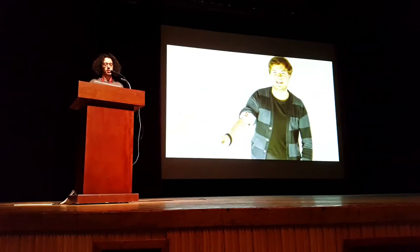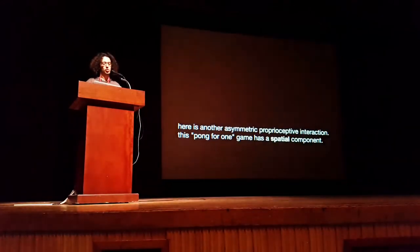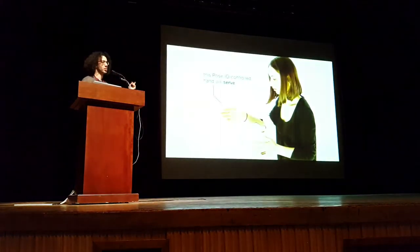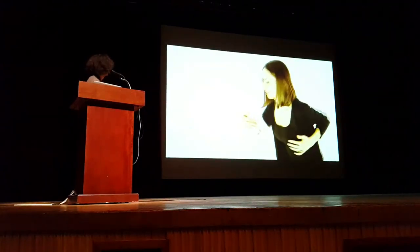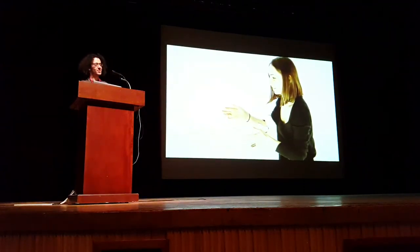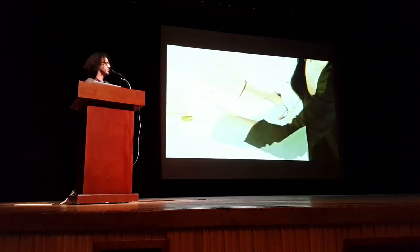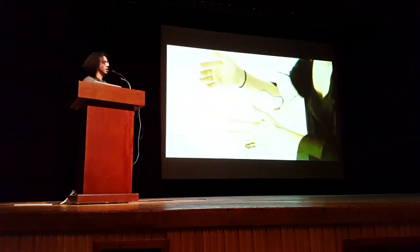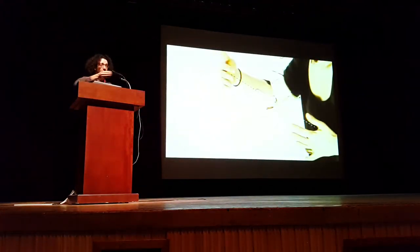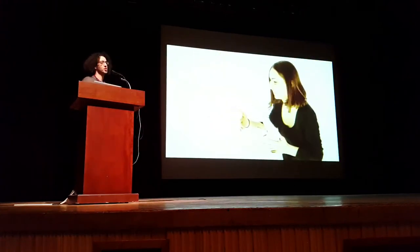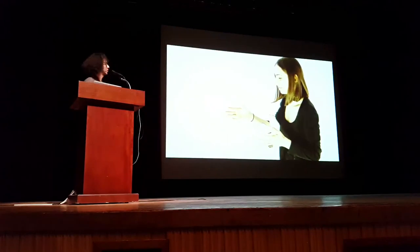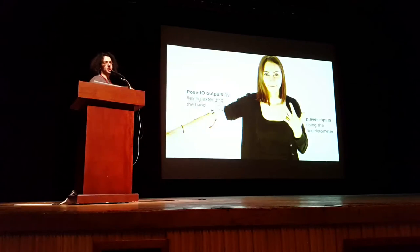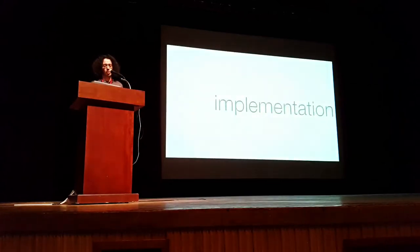Another example of asymmetric proprioceptive interaction is a game called Imaginary Palm. My co-author Alexandra plays while the computer hand serves an imaginary ball — you imagine the trajectory — and with the other hand, which has an accelerometer, you catch it as fast as you can to receive the ball on time. Then another ball is served by the computer hand. One hand is inputting, the other is receiving output from the computer.